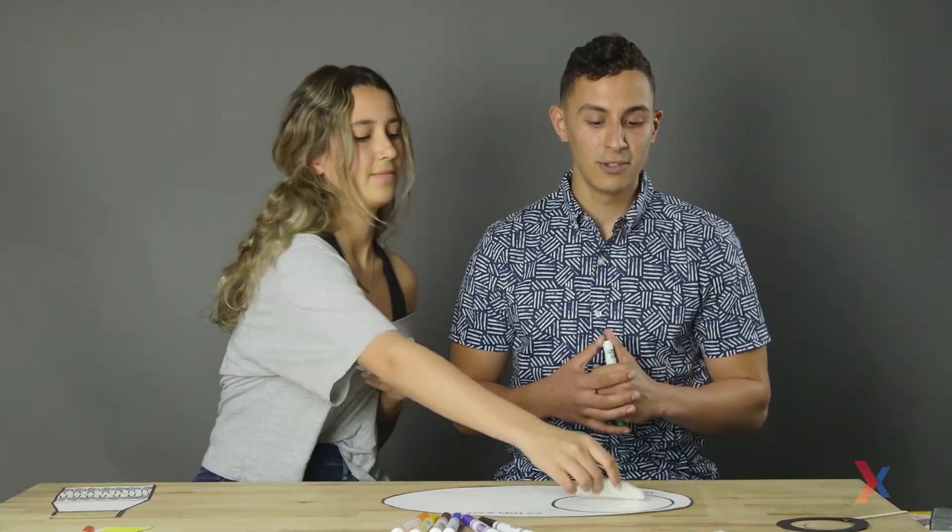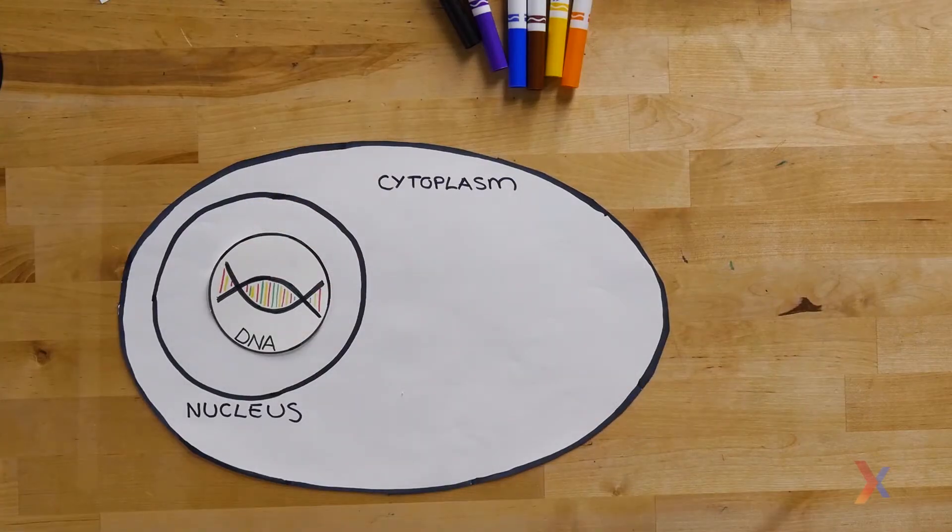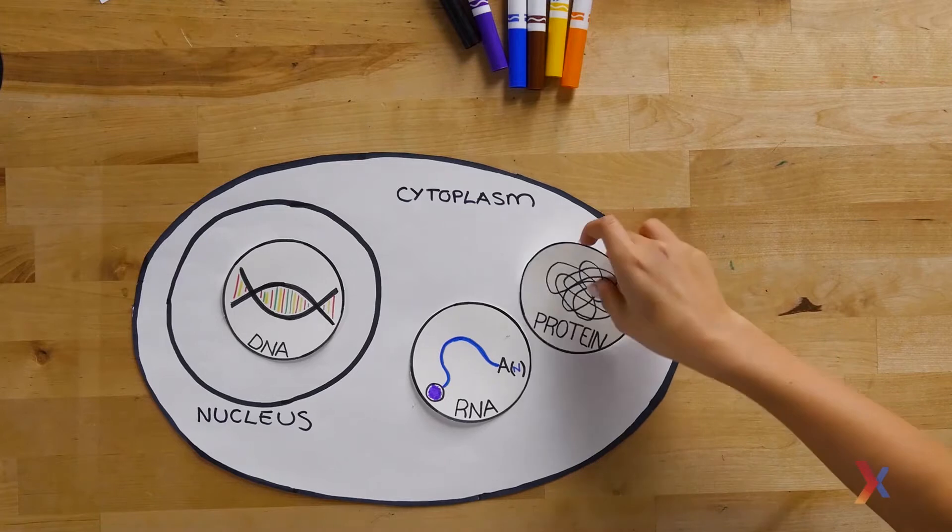In eukaryotic cells, DNA is localized in the nucleus, while RNA and protein is most often found in the cytoplasm.